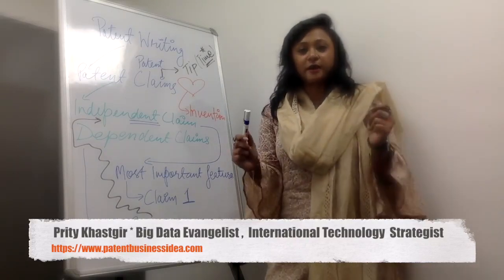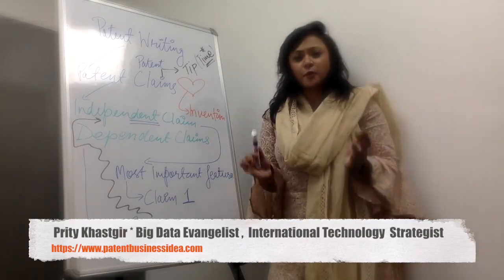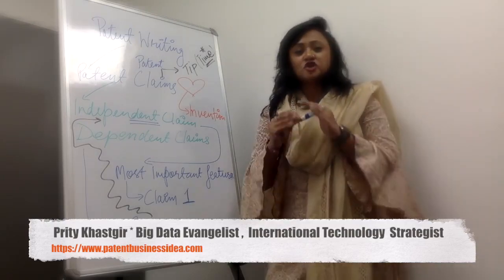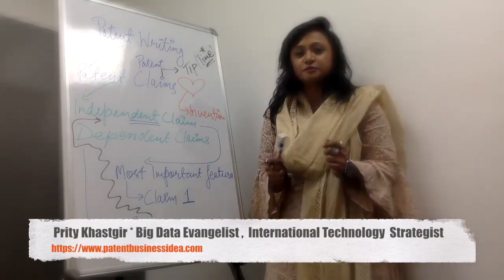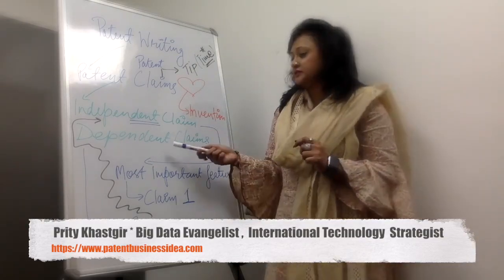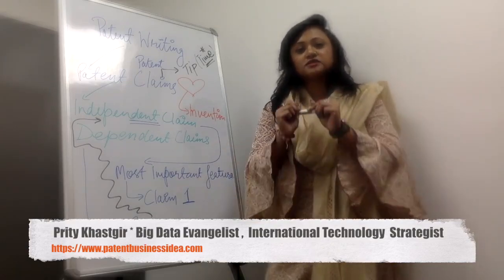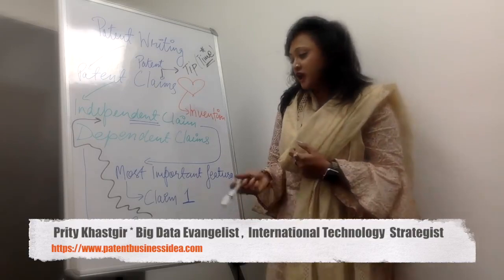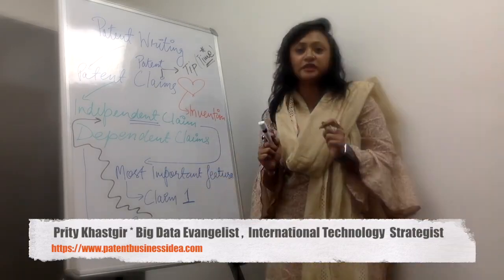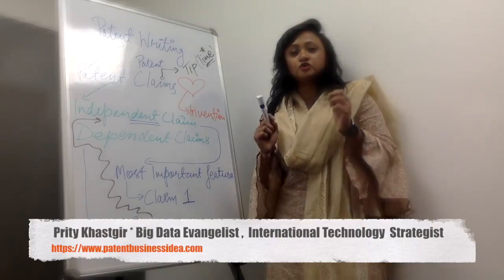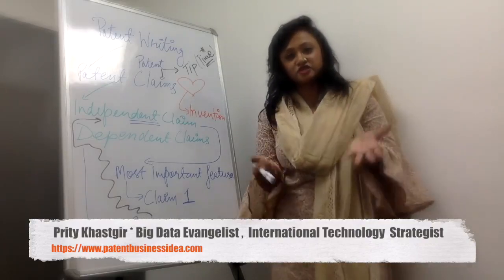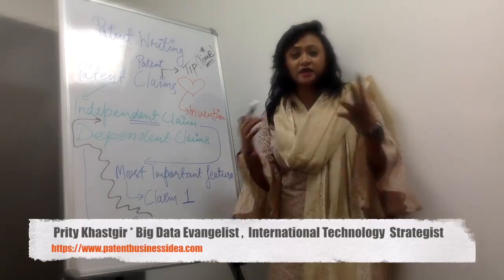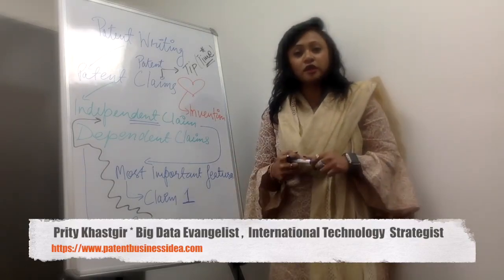Generally, the questions asked till date talk about writing five patent claims. When we talk about five patent claims, the claims would be divided into an independent claim and dependent claims. Claim one is the independent claim — you need to identify the features in the question paper and write them in the independent claim. The rest of the four claims you plan to write would be dependent on claim one.